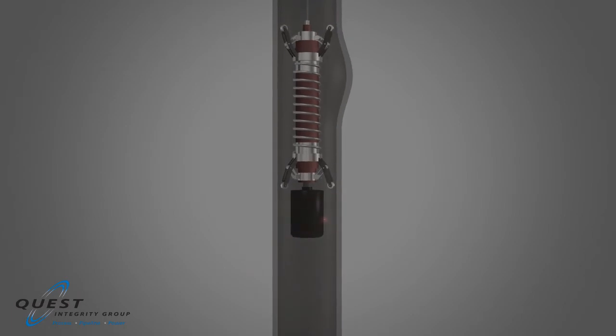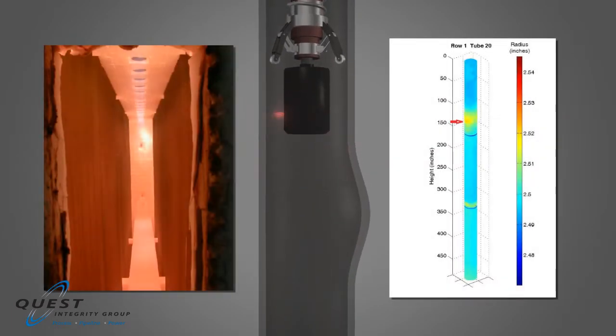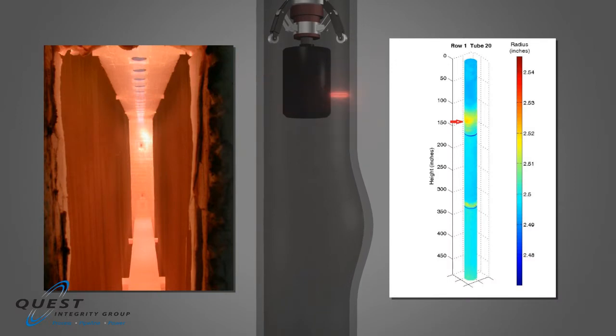LOTUS detects creep strain damage in the catalyst tube as a result of burner flame impingement. This damage is illustrated in diametrical line graph and 3D graphic images.